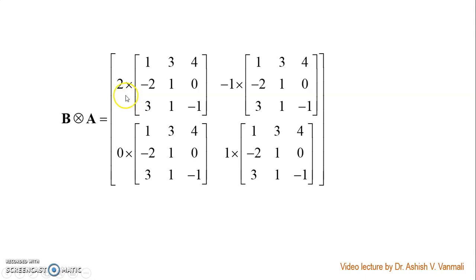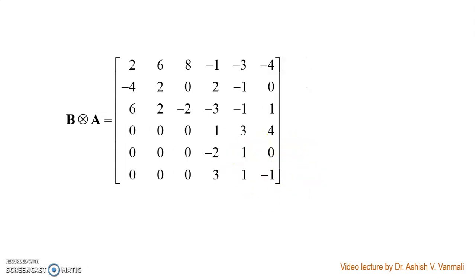As I said earlier, we have to multiply them point by point. 2 will get multiplied by each element of this, minus 1 will get multiplied with each element of matrix A. Similarly, 0 will get multiplied with all these elements resulting in 0, and 1 will get multiplied with all these values. Finally, we will get this answer.